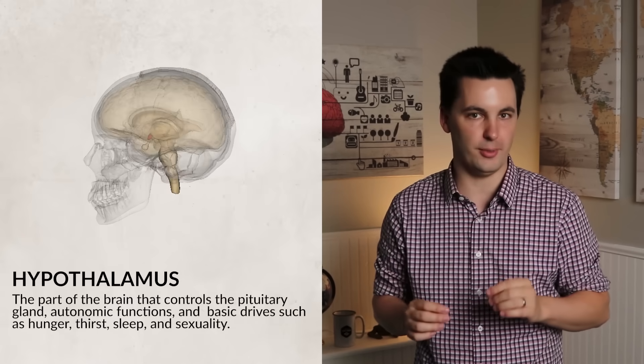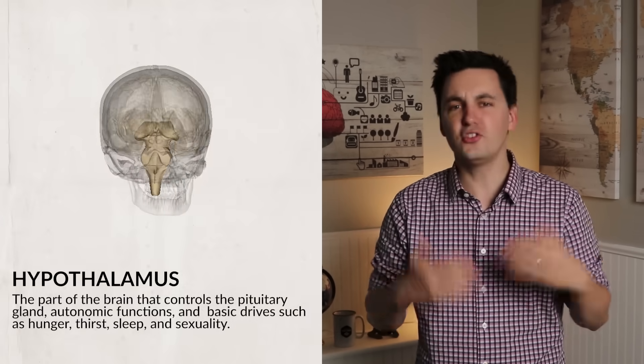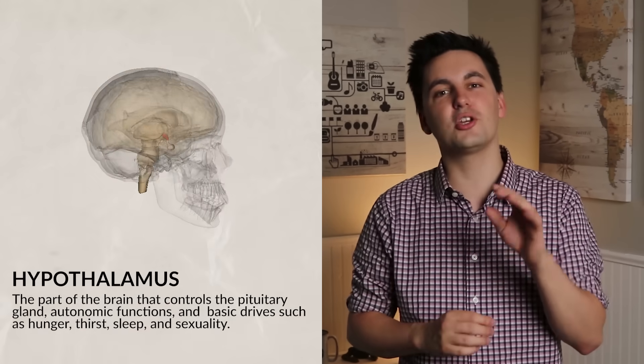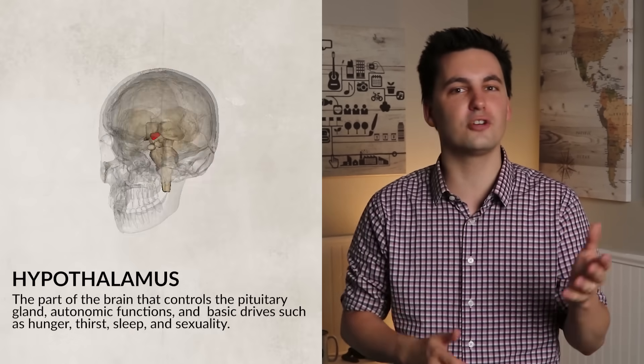Under the thalamus is the hypothalamus, which keeps your body balanced. This allows us to have homeostasis. This is what controls your drives, thirst, hunger, temperature, and, of course, sex. The hypothalamus also works with the pituitary gland to regulate and control your hormones. Remember, we talked about hormones and also the endocrine system back in our Unit 2 Topic 2 video.